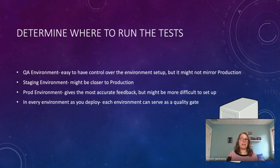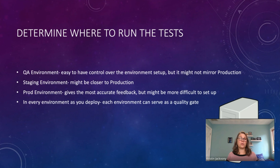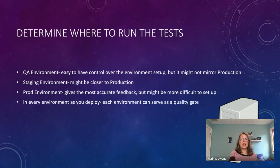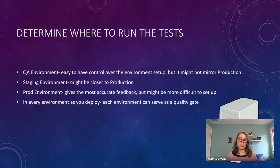You can also run your tests in every environment as you deploy — like smoke tests running in each environment during deployment — and those tests serve as a quality gate. For example, if you're deploying to staging, your smoke tests run, a test fails, you check it manually on a device and confirm there's actually something wrong — then you can pull back that deploy and you've saved everyone from a bug getting closer to production.